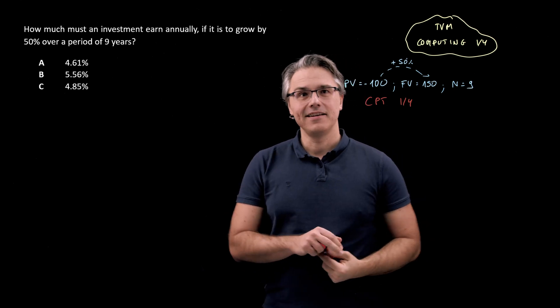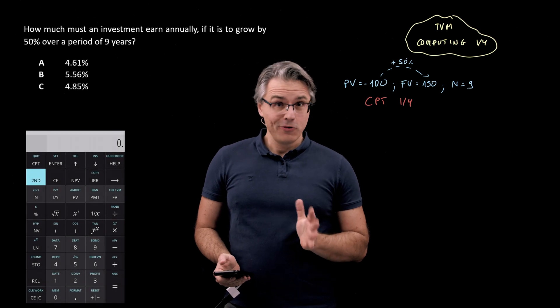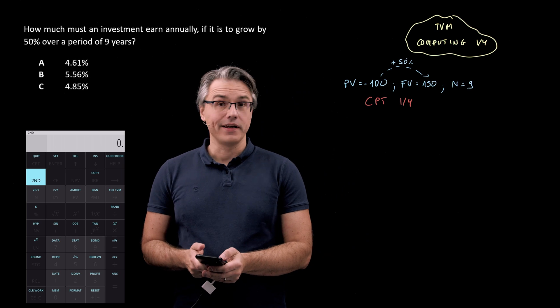So let's take the calculator and make these inputs. Let's always clear the time value of money worksheet first. So that's second followed by FV.